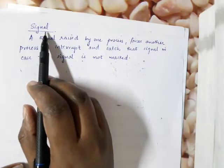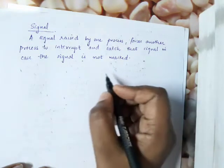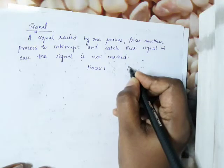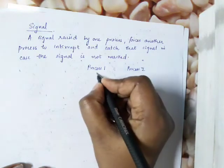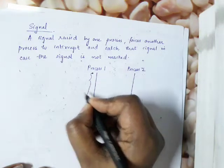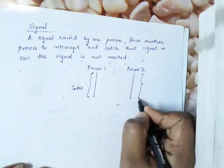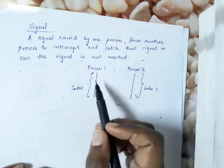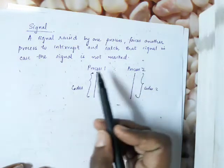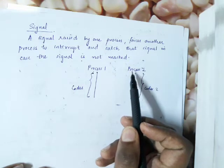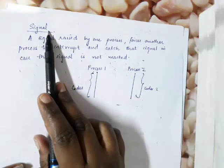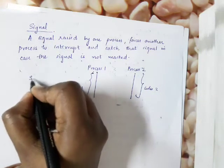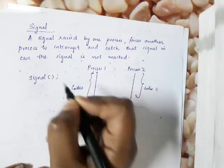About the signal function: assume that I have two processes, process 1 and process 2. We will discuss process 1 and process 2 and how to communicate between these processes. This is the basic syntax of the signal function.